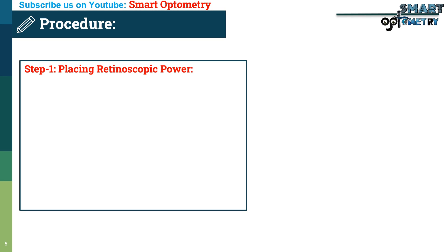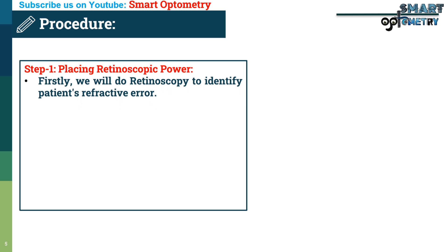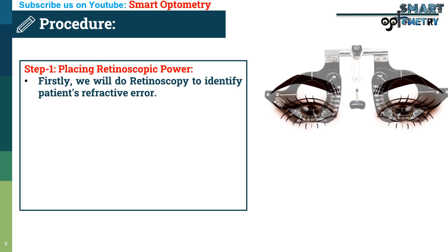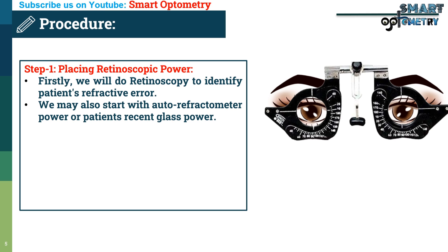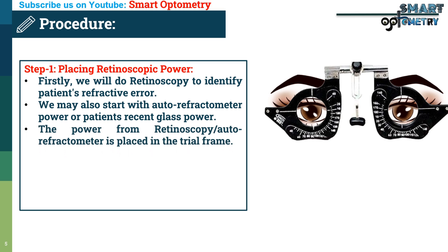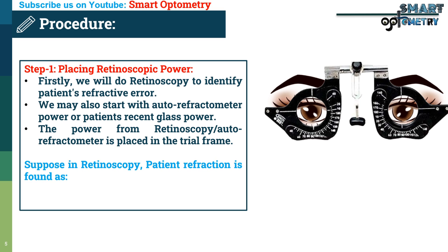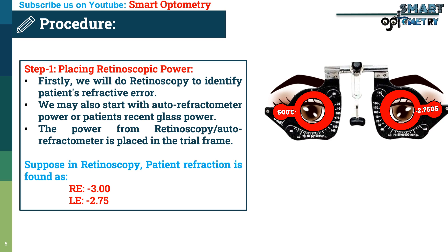Step 1 — placing retinoscopic power in the trial frame. First, we perform retinoscopy to identify the patient's refractive error. We may also start with autorefractometer power or the patient's recent glass power. The power from retinoscopy or autorefractometer is placed in the trial frame. For example, the right eye is found to be minus 3.00 D and the left eye minus 2.75 D.